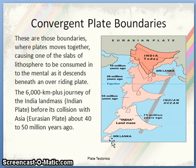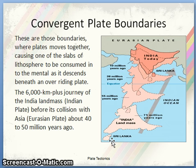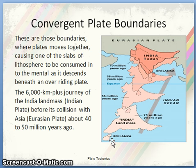Convergent plate boundaries are those where plates move together, causing one slab of lithosphere to be consumed in the mantle as it descends beneath an overriding plate. The 6,000-kilometer-plus journey of the Indian plate before its collision with the Eurasian plate about 40 to 50 million years ago is an example. Because one plate is consumed under another, it is called a destructive plate margin.